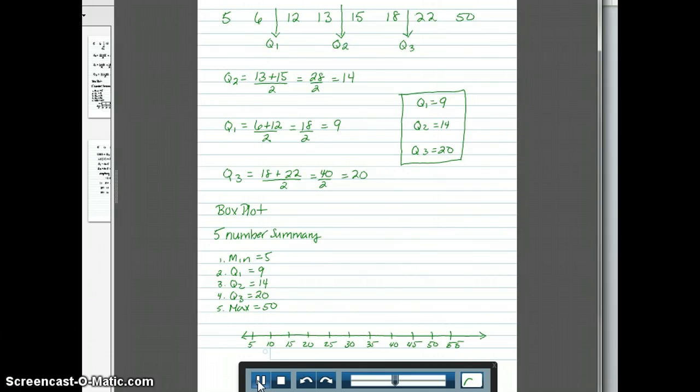So once I have my scale down, I'm going to just put points where each of these values fall, and they're going to be floating above the number line. So the first point I have is at 5. The next one is at 9. Next we're at our Q2, which is 14. Our Q3, which is 20. And our maximum value, which is 50.